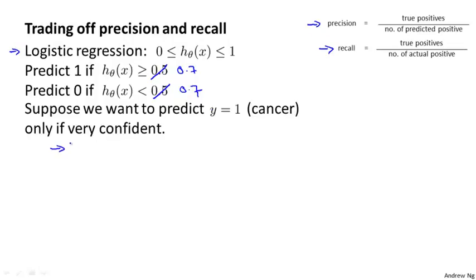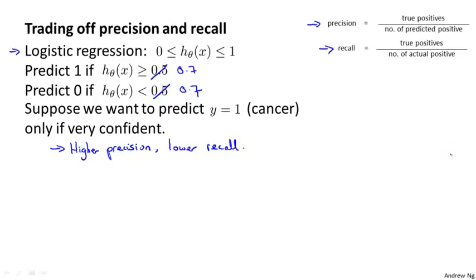By doing this, you end up with a classifier that has higher precision, because all the patients you predict have cancer are ones you're pretty confident actually have cancer. A higher fraction of the patients you predict have cancer will actually turn out to have cancer, because you're making those predictions only when you're pretty confident. But in contrast, this classifier will have lower recall, because now we're going to predict y equals 1 on a smaller number of patients.